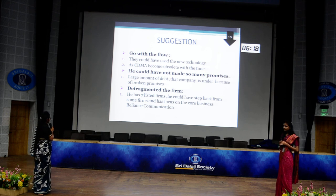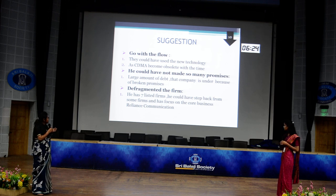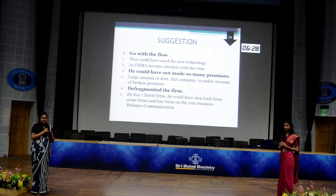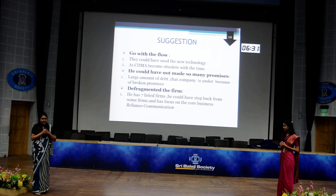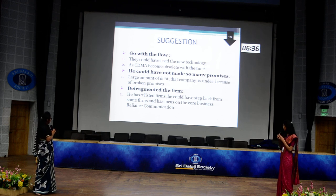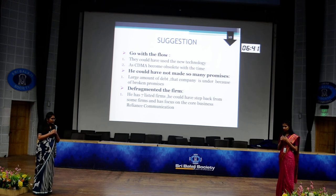The second suggestion is to not make so many promises, as a large amount of the company's debt arose from broken promises — borrowing heavily without being able to deliver services. The third suggestion is to defragment the firm: Anil Ambani had listed seven firms, and he could have stepped back from some of them to focus on the core business, which is Reliance Communication.